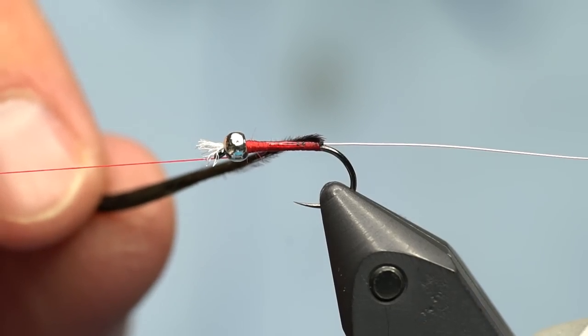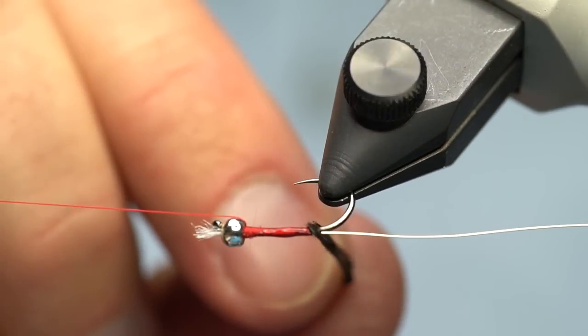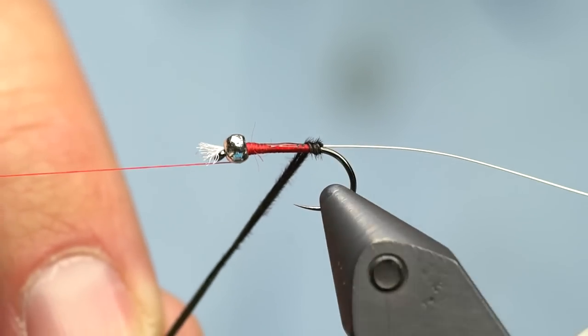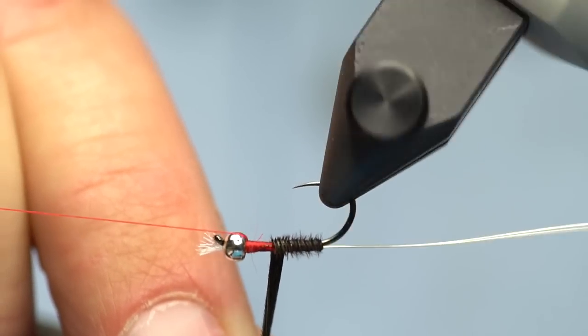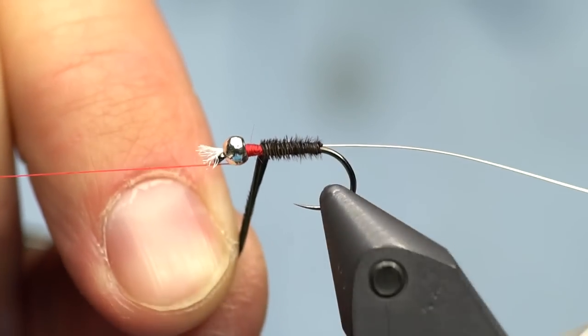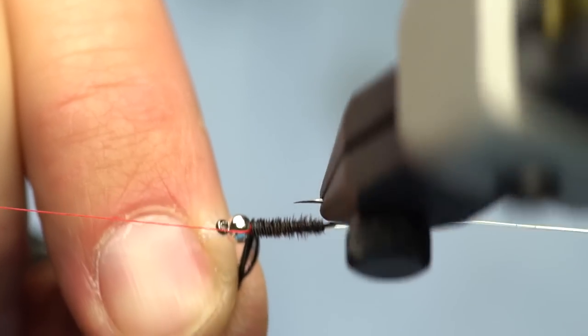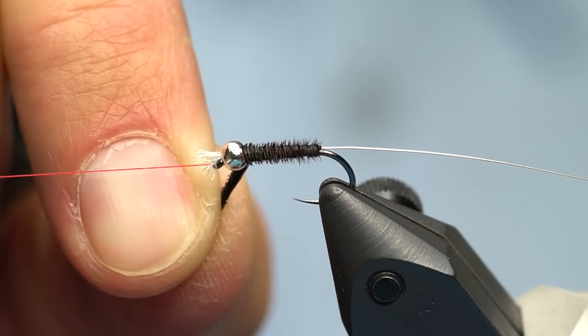One more trick: I'm going to wrap the pheasant tail the opposite direction I wrapped the thread. That's on purpose so that I can then wrap the wire the same direction as I wrap the thread, which makes the wire easier to tie off. In turn, it counter wraps the pheasant tail to make it more durable. So I wrap the pheasant tail up the shank.